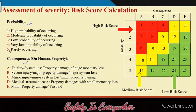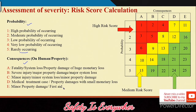Probability is rated on a 1-to-5 scale from high probability of occurring to rarely occurring. Consequences are also on a 5-point scale from fatality to minor property damage or first aid. Using this 5×5 consequence and probability scale, you obtain a qualitative risk matrix.